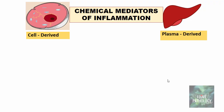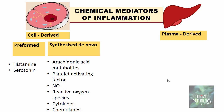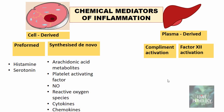As we all know, the liver is the major source of plasma proteins. The cell-derived mediators, as already explained, could be preformed or synthesized de novo. The preformed mediators are most importantly histamine and serotonin. The ones synthesized de novo are arachidonic acid metabolites, platelet activating factors, nitric oxide, reactive oxygen species, and various cytokines and chemokines. Plasma-derived mediators arise from activation of complement or activation of Factor 12. Complement activation produces C3a, C3b, and C5a, whereas Factor 12 activation leads to the coagulation system or kinin system.